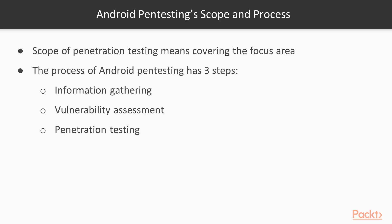Third is penetration testing. Penetration testing means taking what you found in the vulnerability assessment step and verifying that those vulnerabilities actually exist inside the Android application. For example, if you found 10 vulnerabilities, you check them one by one — such as whether an SQL injection attack is actually available. If confirmed, the vulnerability assessment report is correct. In pen testing, we finalize the actual vulnerabilities and then perform further targeted attacks on them.